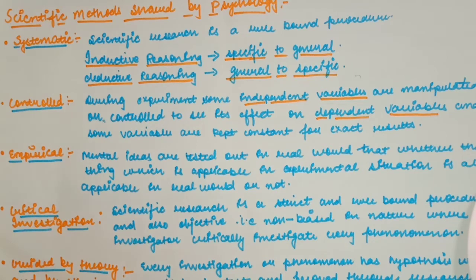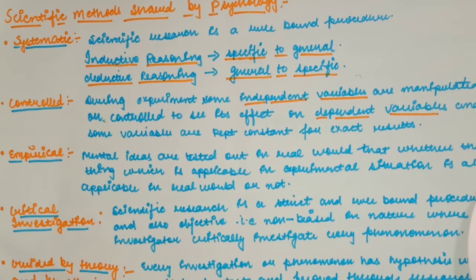Next point is critical investigation. We investigate everything critically using a rule-bound, systematic procedure. The psychologist should not be biased — objectivity is important. If you think your theory needs revision, the investigation should be done critically, keeping everything in mind without bias.